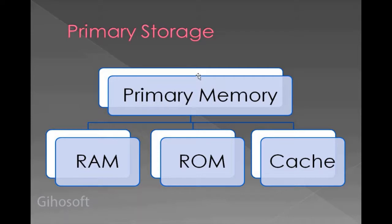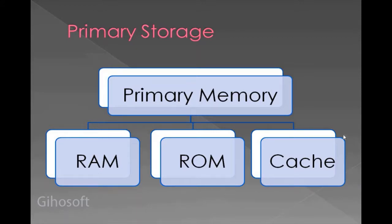When discussing primary memory, we have three types available: RAM, ROM, and cache. There are two pronunciations — some call it 'cache' and others call it 'cache' — it's really up to you. In our local market it is also known as CPU cache. RAM and ROM were in the previous syllabus as well, whereas cache is something new — it is basically a special type of memory.